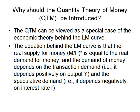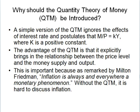The equation behind the LM curve is that the real supply for money is equal to real demand for money. The demand for money depends on the transaction demand and the speculative demand. A simple version of the quantitative theory of money ignores the effects of interest rate and postulates the real money supply is equal to ky, where k is a positive constant. The advantage of the quantitative theory of money is that it explicitly brings in the relationship between the price level and the money supply and output.